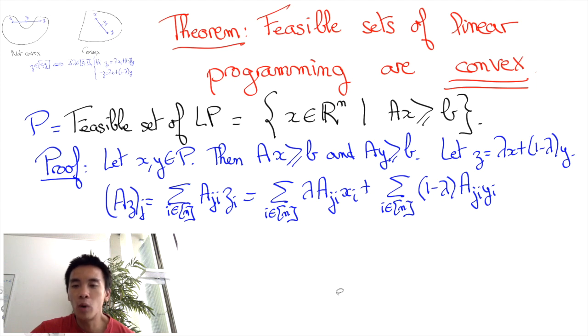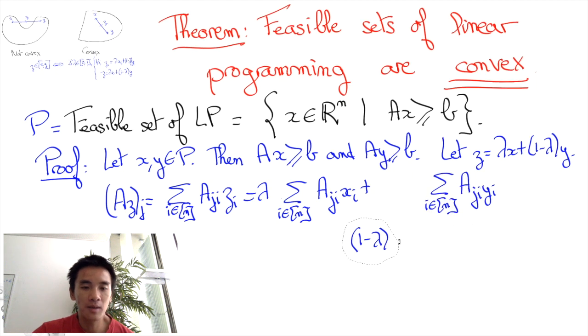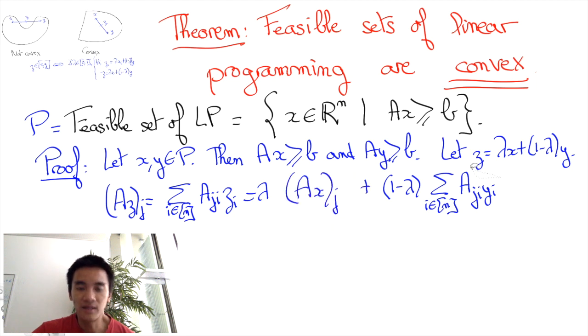Now we can take the lambdas out of the sum. We obtain lambda times the sum of A_ji x_i plus (1 minus lambda) times the sum of A_ji y_i. And we recognize here the values of (AX)_j and (AY)_j.